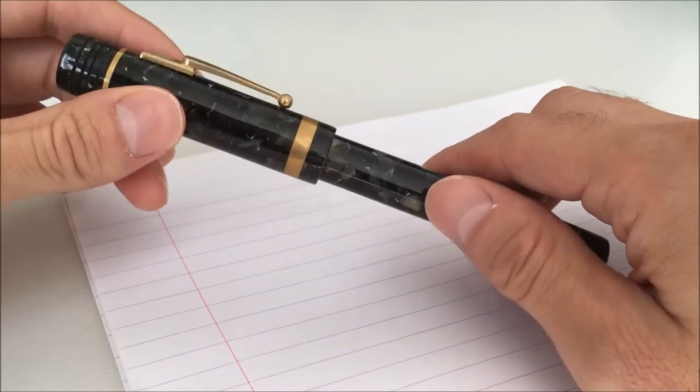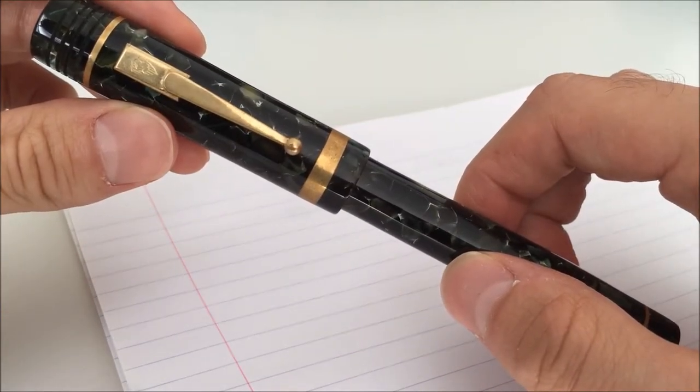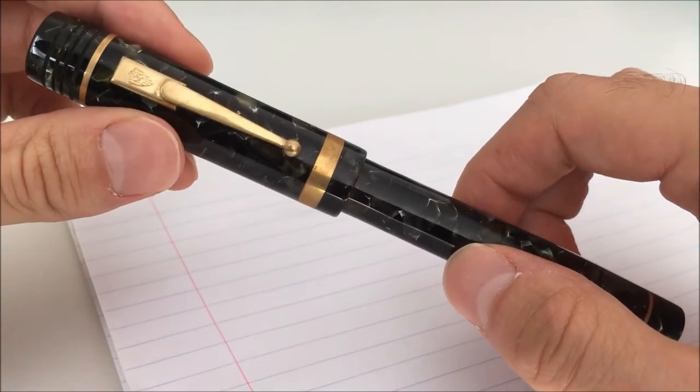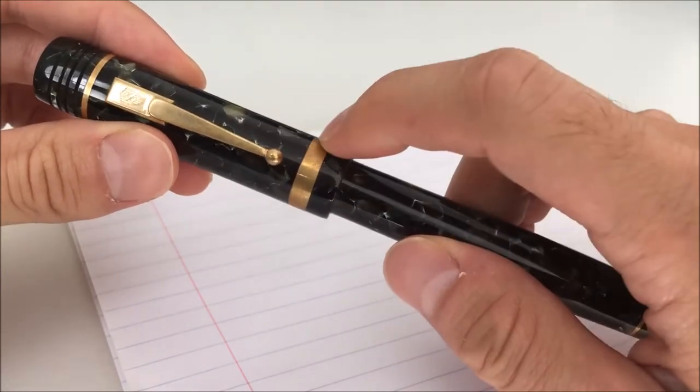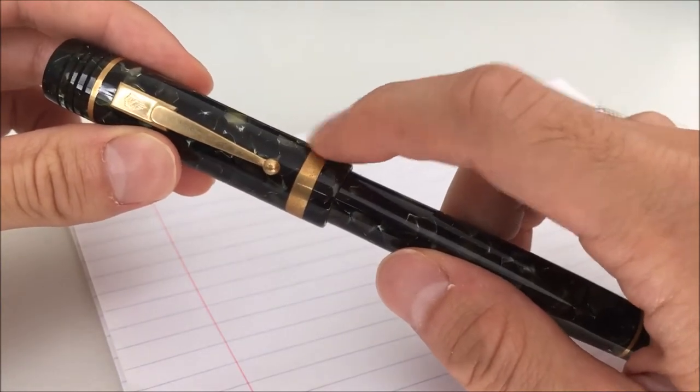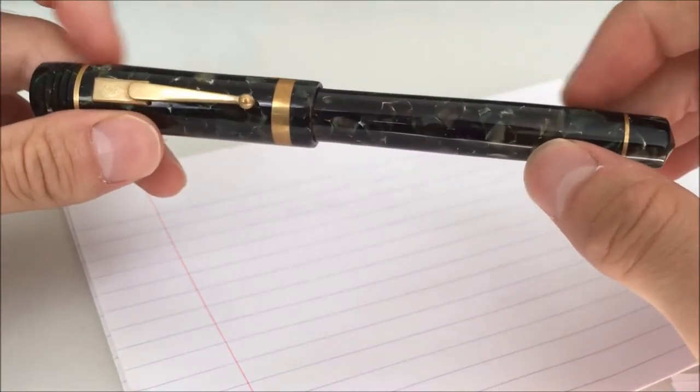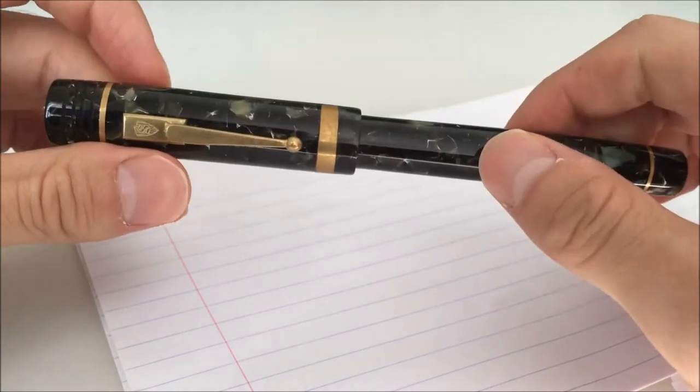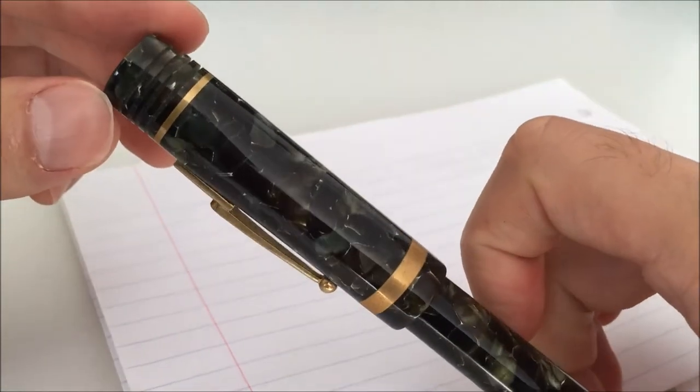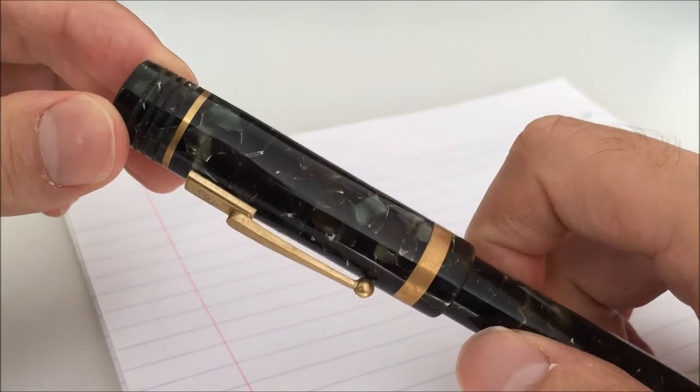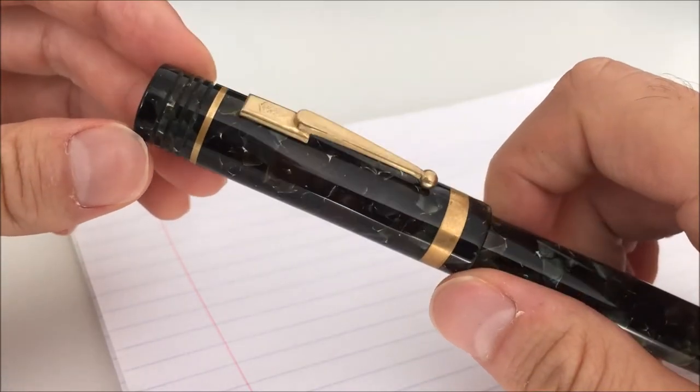The clip is pretty unique, almost looks like a doorknob. She calls this a heritage clip and you have a variety of clips to choose from. I have a brass band cap band here as well as two rings towards the end of the pen. I have grooves at the end of the cap as you can see here. This is a design element which I got from the Churchill.